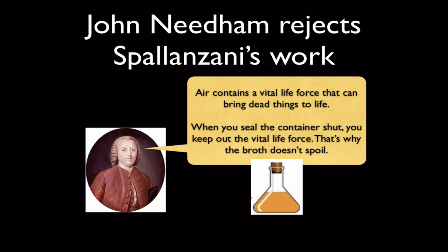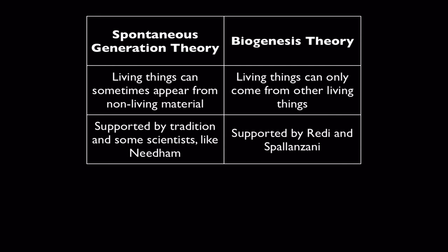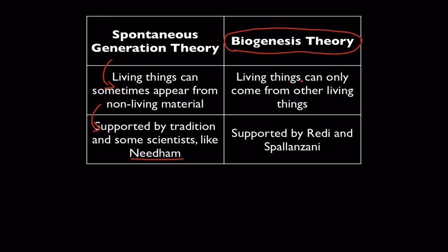That sounds a lot like witchcraft, but many people still thought that way. Comparing Redi and Spallanzani shows the divide between two views of where life comes from: spontaneous generation — the idea that living things can sometimes appear in non-living material, supported by a long tradition of superstition — and biogenesis, our modern theory, which says living things can only come from things that are already alive. Biogenesis is now part of the cell theory.